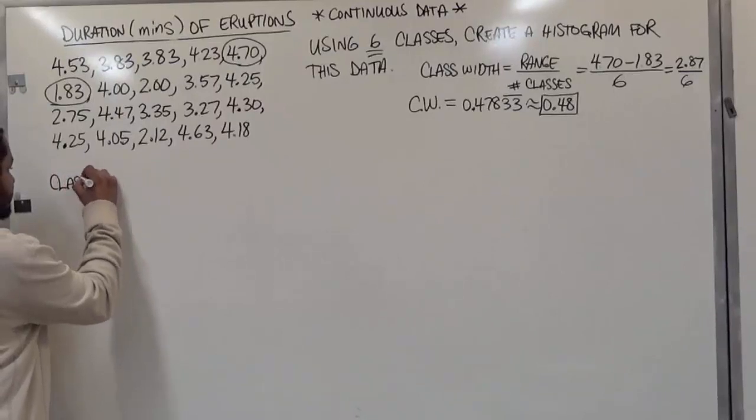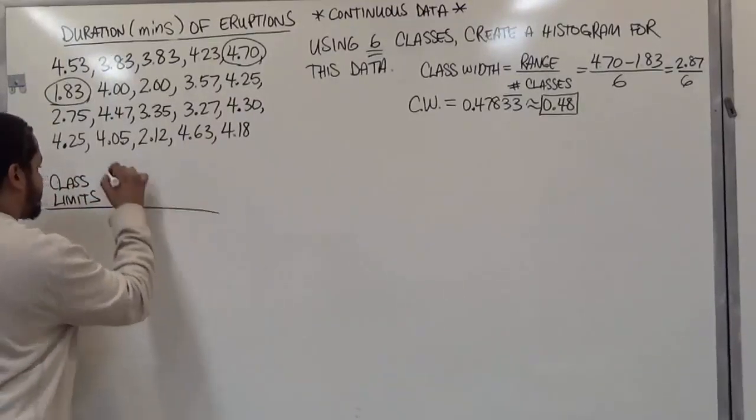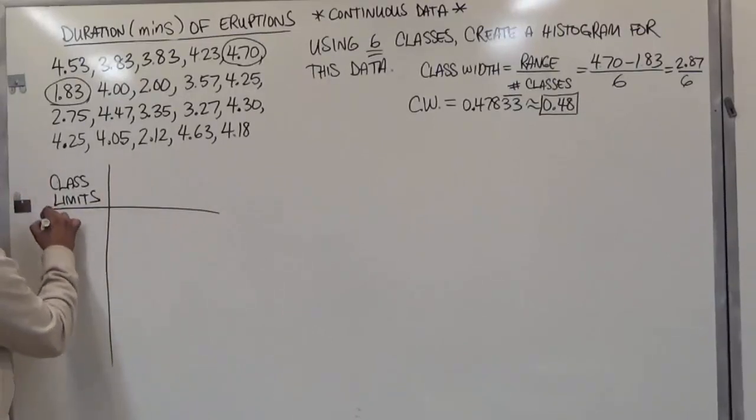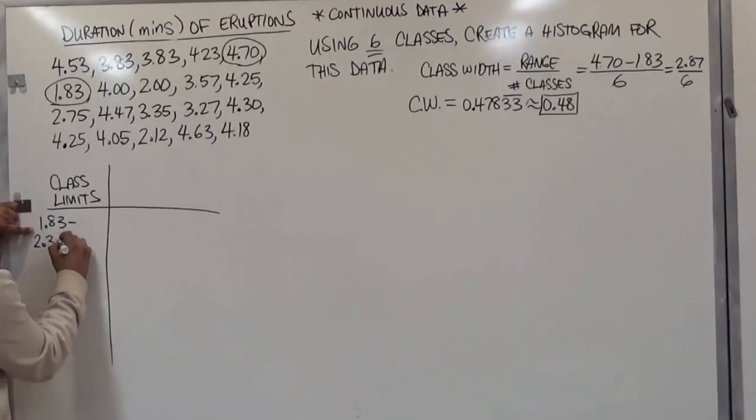So here we have our class limits. We're beginning the class limits with the number 1.83. Now when we add the class width to this number, we want to add that number going downwards. So we're adding 0.48 to every one of these numbers.